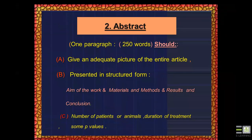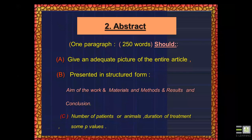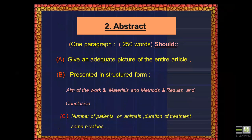Regarding the abstract, many journals limit it to 150 words. The abstract is presented in a structured format. You can talk about the aim of the work, material, methods, results, and conclusion within those 150 words.